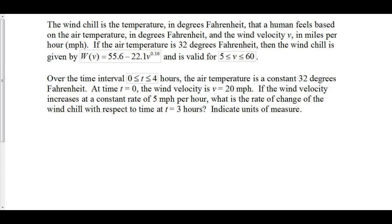The wind chill is the temperature in degrees Fahrenheit that a human feels based on the air temperature and the wind velocity in miles per hour. If the air temperature is 32 degrees Fahrenheit, then the wind chill is given by W of V. From zero to four hours, the air temperature is a constant 32 degrees Fahrenheit. At time t equals zero, the wind velocity is 20 miles per hour. If the wind velocity increases at a constant rate of 5 miles per hour per hour, what is the rate of change of the wind chill with respect to time at t equals three hours? Indicate units of measure.